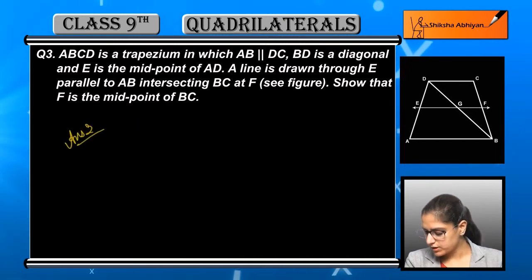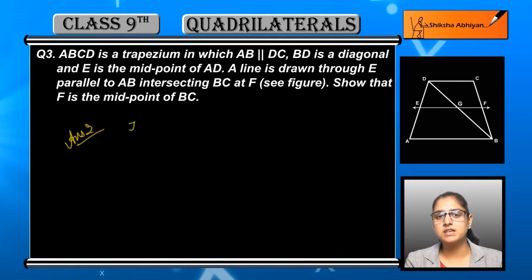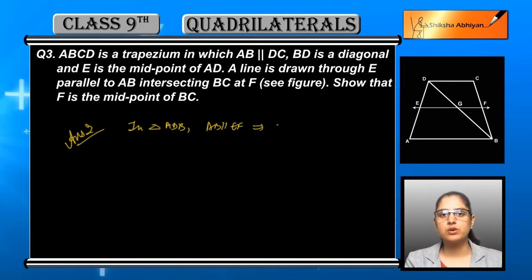You have to show that F is the midpoint of BC. So let us see - we have been using midpoint results, now we will use the converse. So we have first of all